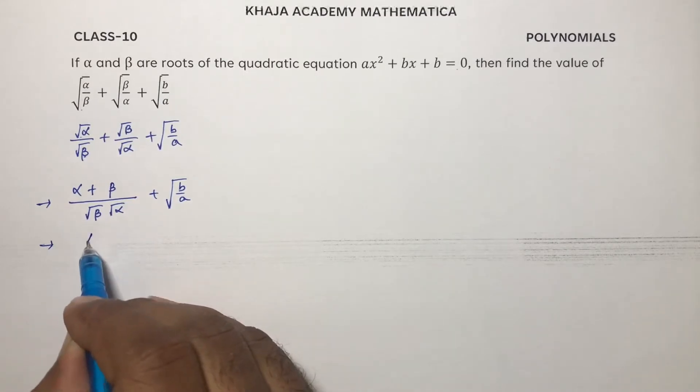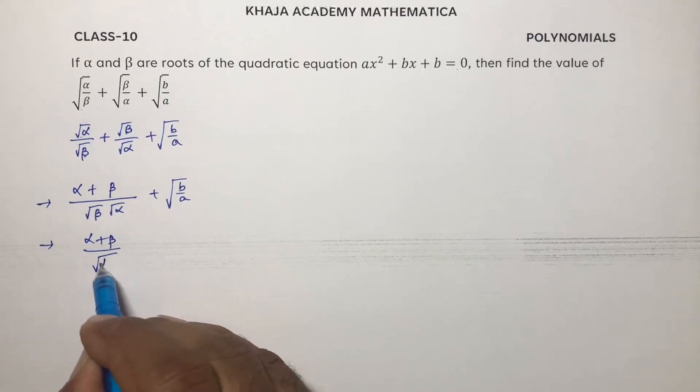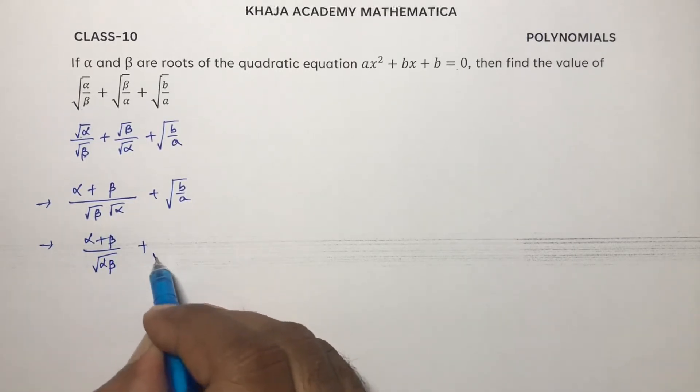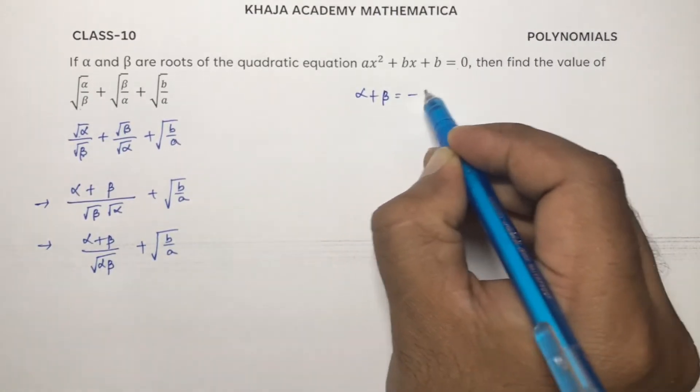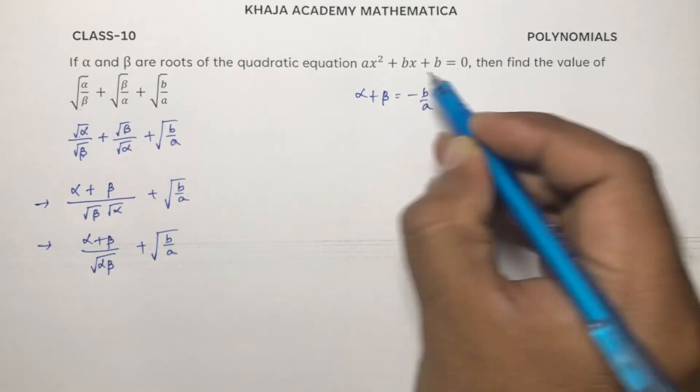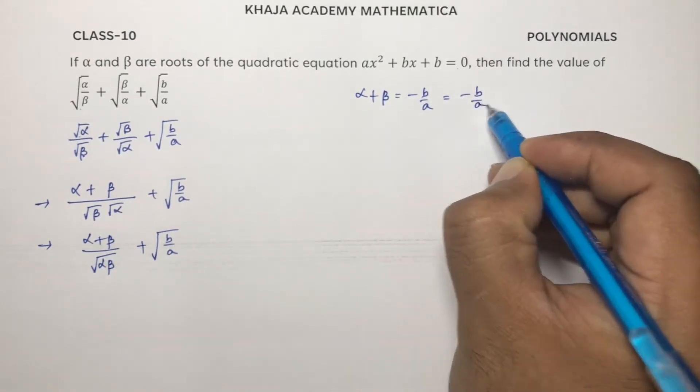Now here alpha plus beta by root beta alpha, or alpha beta, plus root b by a. With this equation, alpha plus beta formula is minus b by a. In the question it is also minus b by a.